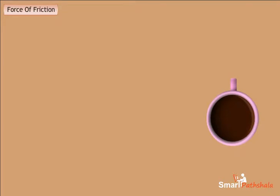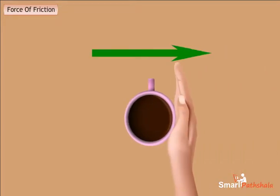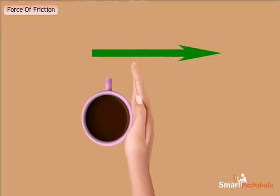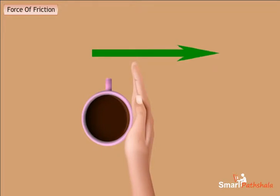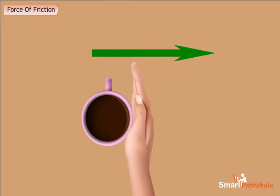Now place the same cup on the right side of the table and push it gently towards the left side. You can again observe that it stops moving after a certain distance. The force that stops the movement of the cup is the force of friction.